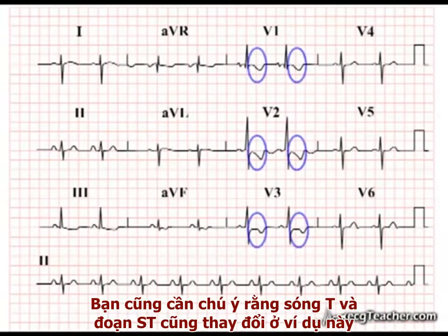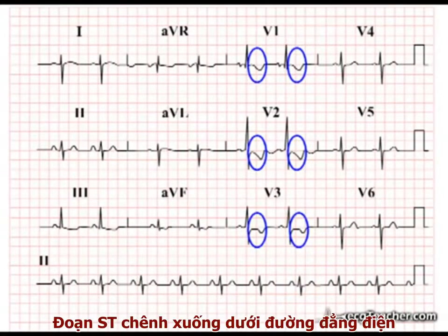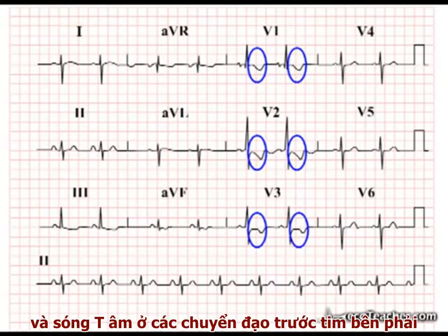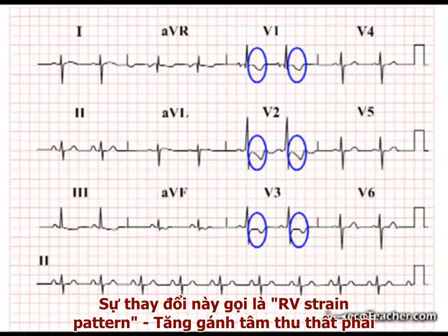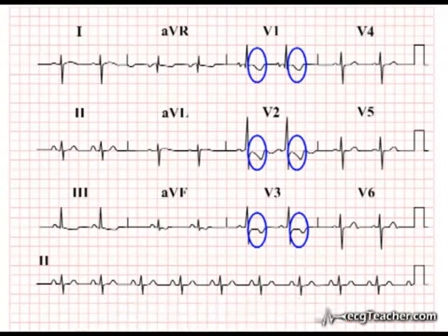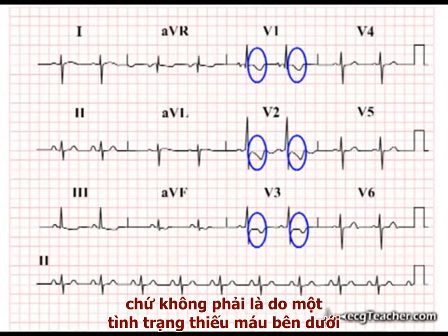You will also notice the T wave and ST segment changes present in this example. The ST segments are depressed below the isoelectric line, and the T waves are deeply inverted in the right precordial leads. These changes represent a right ventricular strain pattern secondary to hypertrophy and do not reflect any underlying acute ischemia.